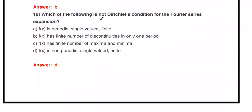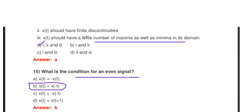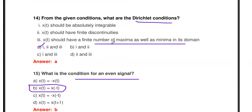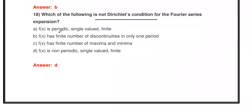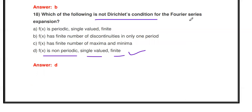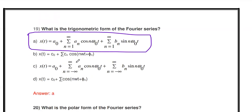Next question: Which of the following is NOT a Dirichlet condition? The options are: (A) f(x) is periodic, single-valued, and finite; (B) f(x) has a finite number of discontinuities in only one period; (C) f(x) has a finite number of maxima and minima; (D) f(x) is non-periodic, single-valued, and finite. The answer is D — 'non-periodic, single-valued, and finite' is not a Dirichlet condition.